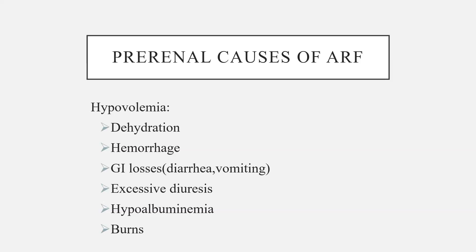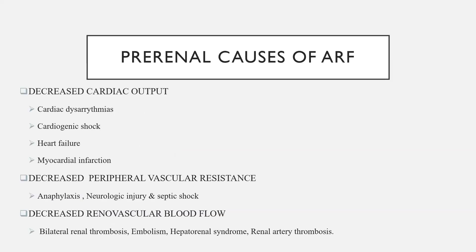The pre-renal causes of ARF include hypovolemia, which can occur due to dehydration, hemorrhage, gastrointestinal losses such as diarrhea or vomiting, excessive diuresis, hypoalbuminemia, and burns. Further causes include decreased cardiac output, which can occur in cardiac dysarrhythmias, cardiogenic shock, heart failure, and myocardial infarction. It can also occur in decreased peripheral vascular resistance, which can be caused by anaphylaxis, neurologic injuries, and septic shock.